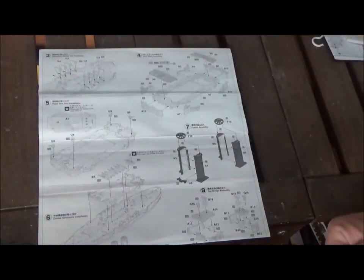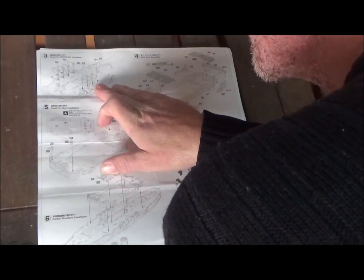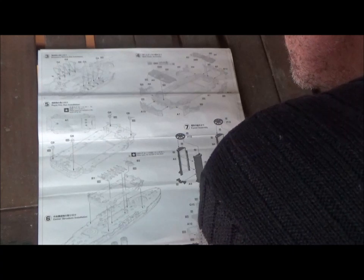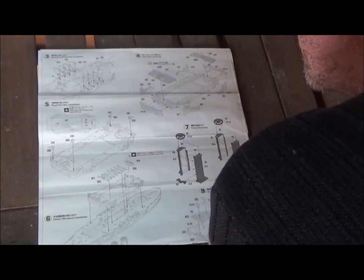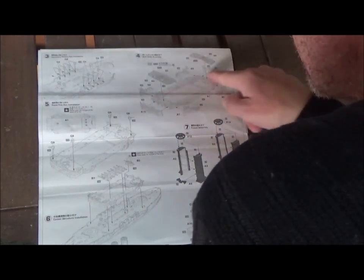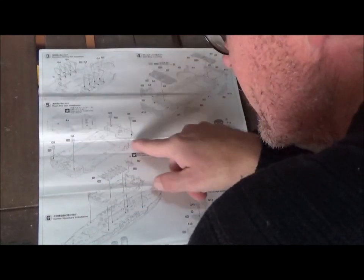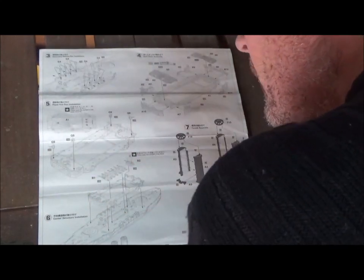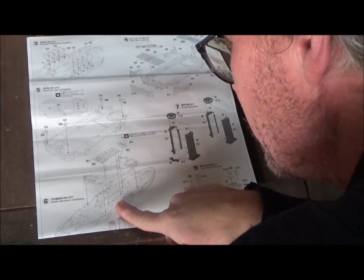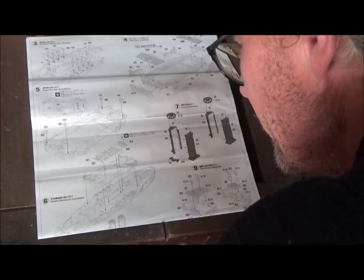Then we gotta go to the other side where the rest of the instructions are. Number three, the secondary battery putting them in there. Number four is the port deck. There's quite a few parts that go around here for this deck here. Number five rapid fire guns goes on to the deck that we just built. There's four of them. Six for putting the deck on. There's a couple other little parts that go on top there, like inside the deck part.